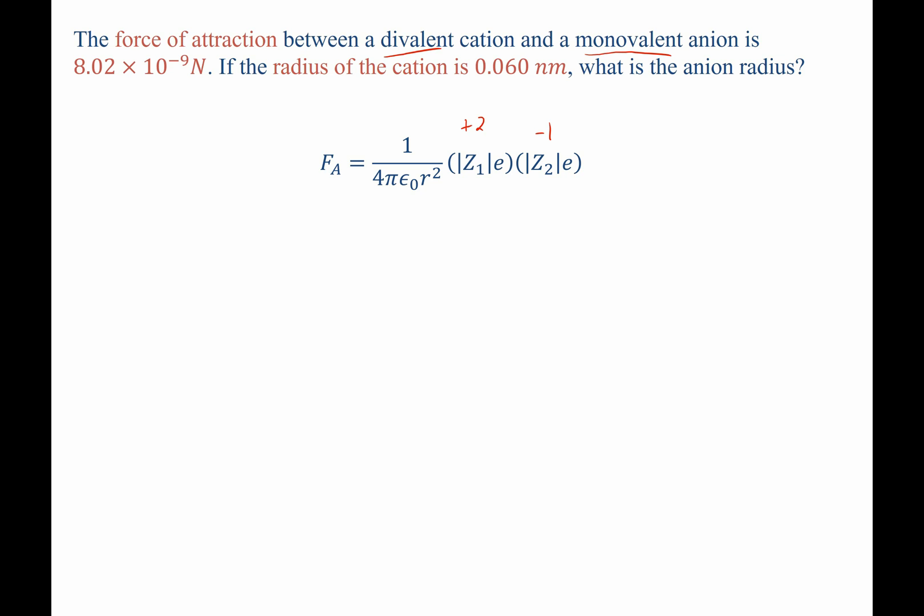Plugging these values in now and solving for R, R naught, the interatomic separation distance, we have R naught equals 2 times the fundamental charge squared, divided by 4π epsilon naught, times the attractive force, this whole thing taken to the 1 half power.